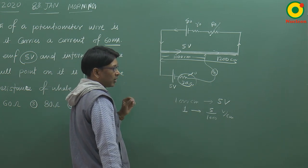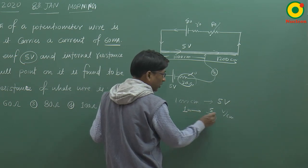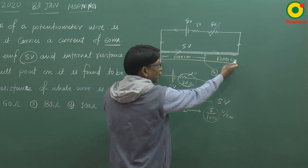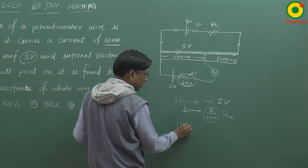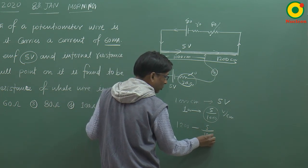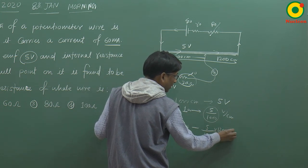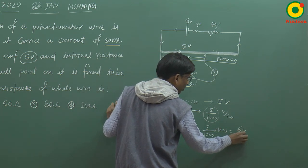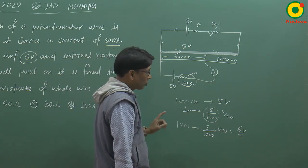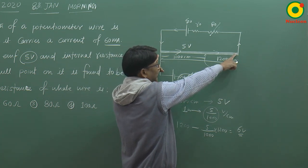तो 1 centimeter पर जो potential difference है, उससे 1200 centimeter पर कितना potential difference होगा? यह आजाएगा: 5 divided by 1000 into 1200 — यह आजाएगा 6 volt। तो 6 volt potential difference है पूरे wire पर।